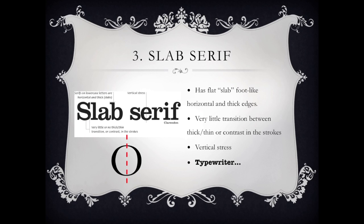Next, we have slab serif. To identify it, it has flat slab, foot-like horizontal, and thick edges. It has very little transition between the thick, thin, or contrast in the strokes. It has a vertical stress just like the serif font, but think of it as a typewriter font.